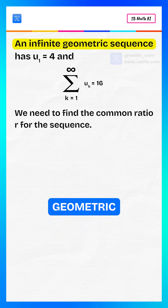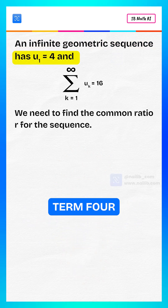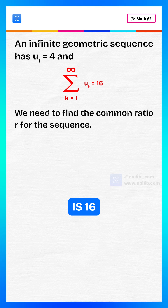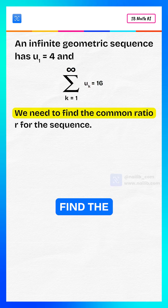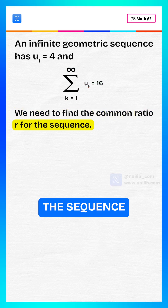An infinite geometric sequence has first term 4 and the sum to infinity is 16. We need to find the common ratio r for the sequence.